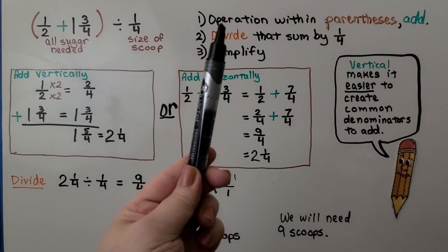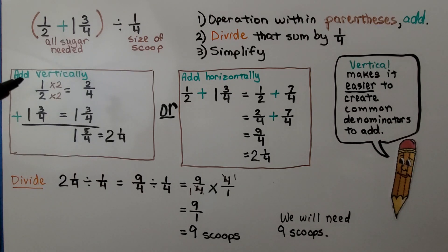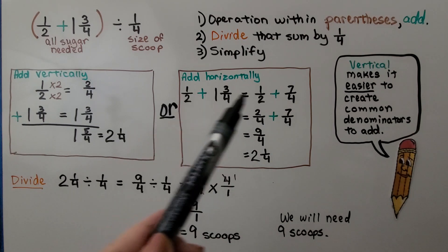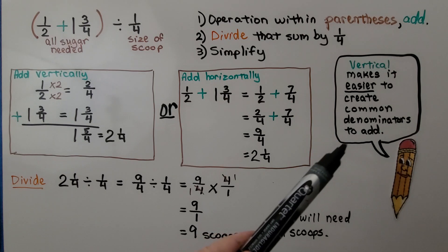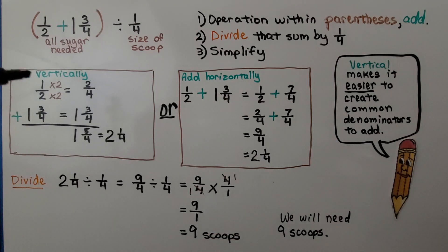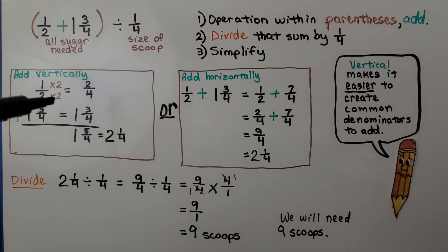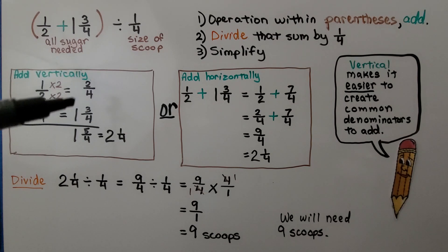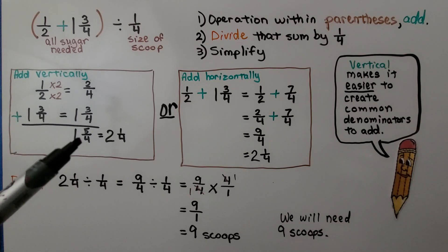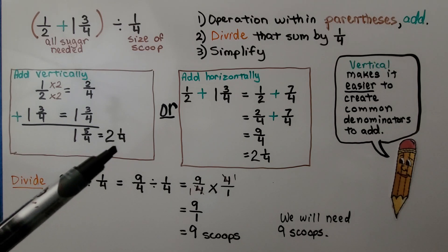The first thing we do is the operation within the parentheses — we're going to add. We can add vertically, stacked, or horizontally. Vertical makes it easier to create common denominators, which is my preference. We stack one half plus one and three fourths. We need a common denominator of four, so one half becomes two fourths. Two fourths plus one and three fourths: two plus three is five fourths, giving us one and five fourths, which simplifies to two and one fourth.